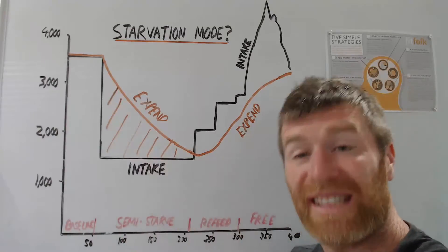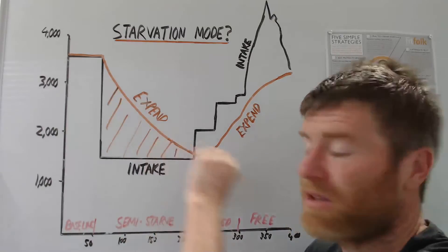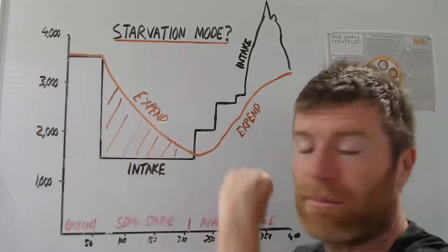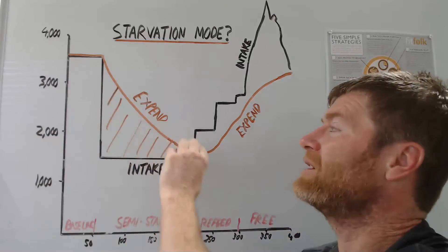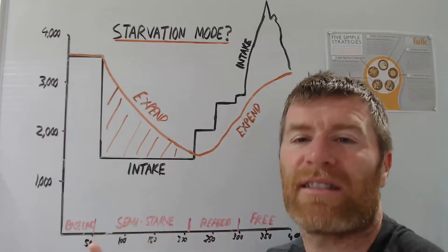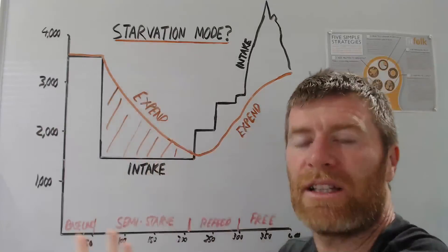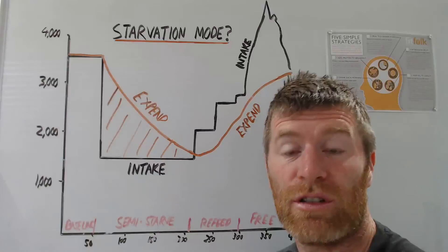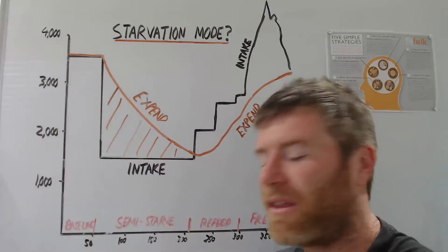So they were still losing fat even though it was slower because of all this metabolic adaptation. And this is the study that shows us that we know that the idea that your calories can go too low to lose fat is kind of a myth.